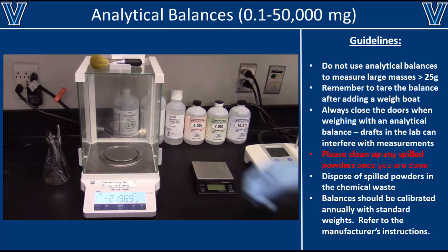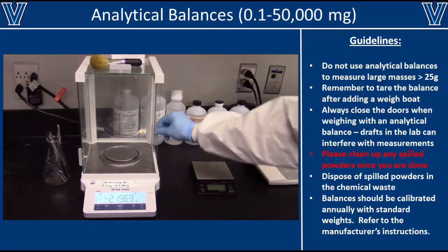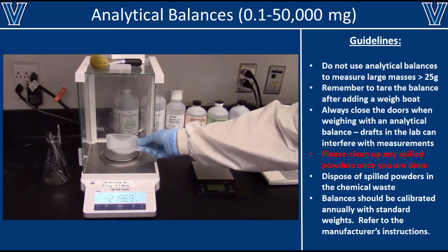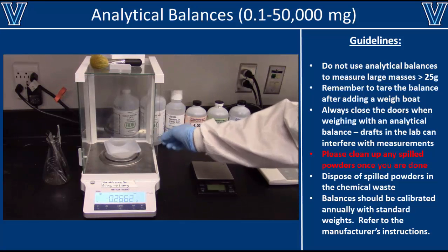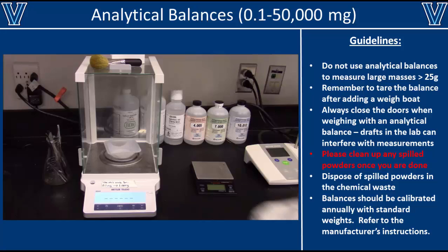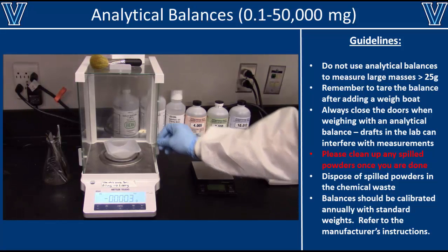To weigh masses larger than one gram, use a weigh boat. Insert the weigh boat into the analytical balance, close all the doors, and tare it to set the mass to zero. Then add your chemical.